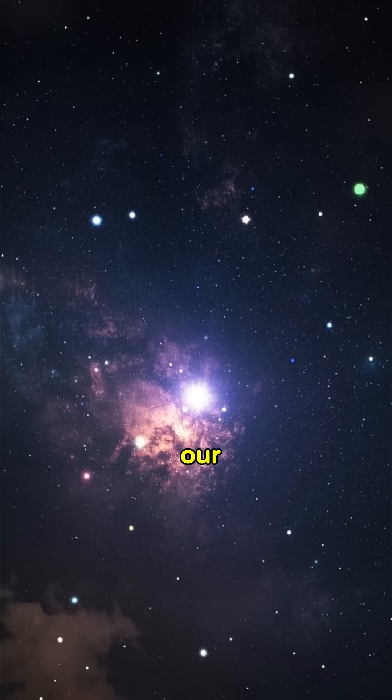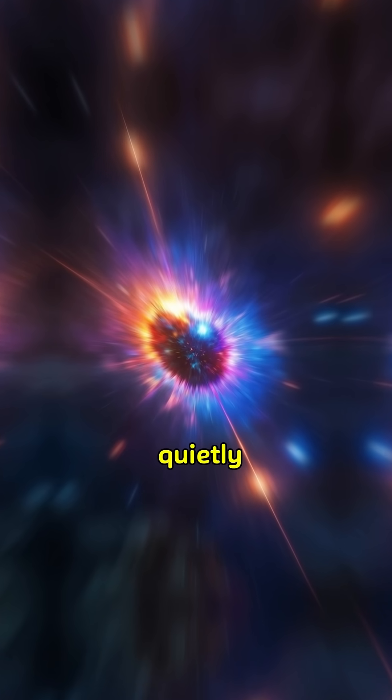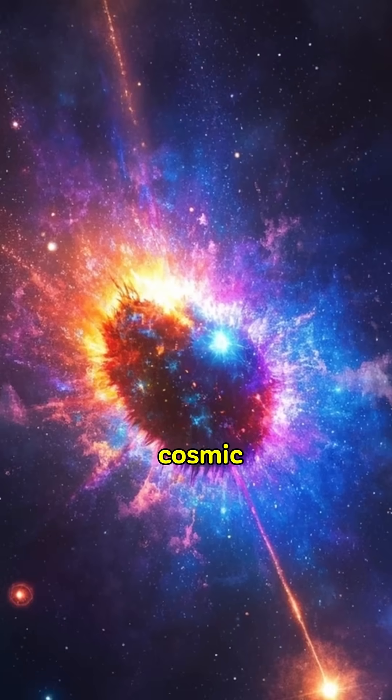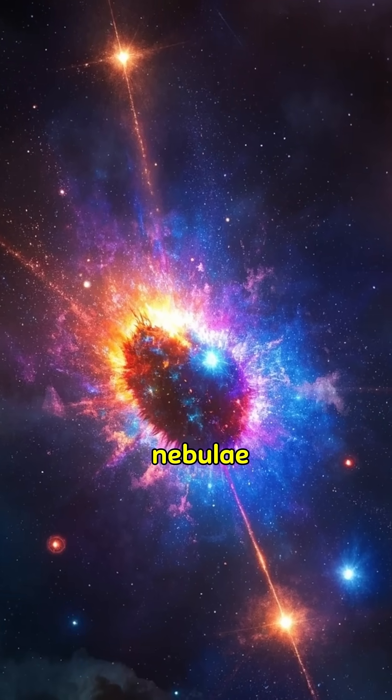Ever wondered what happens when stars like our sun die? They don't go quietly. Instead, they shed their outer layers, creating stunning cosmic structures known as planetary nebulae.